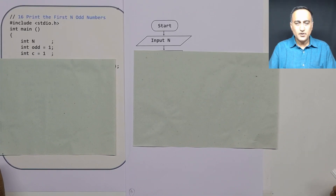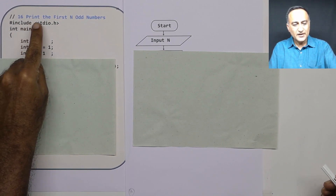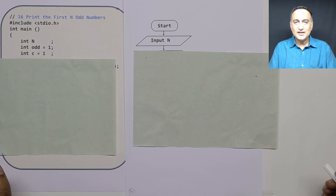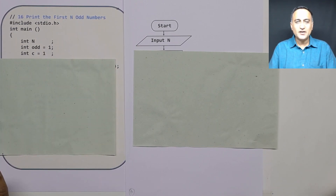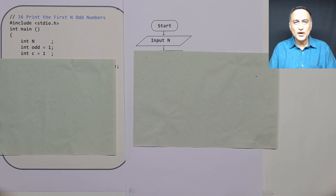In this particular problem on the Bogilal series, we are asked to print the first n odd numbers. This program is slightly different from when you are asked to print odd numbers up to n. Suppose you are asked to print odd numbers up to n and n is 5, then you will print 1, 3, and 5.